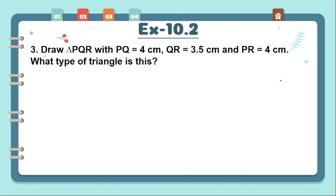So question number 3 is: Draw a triangle PQR with PQ 4cm, QR 3.5cm and PR 4cm. What type of triangle is this? So let's see how we draw.